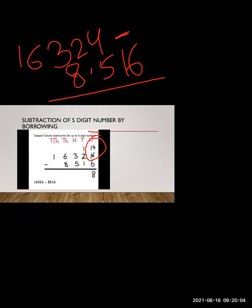Since we cannot subtract, we will borrow from the next digit. The next digit is 2, so we borrow from 2. The 2 becomes 1 — we cancel the 2 and write 1 — because it gave one ten to the unit digit. We also cut the 4 and replace it with 14.